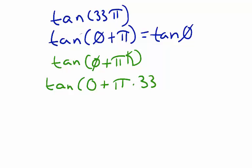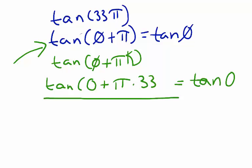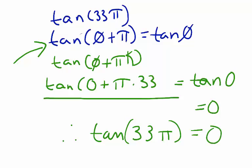Considering our property that tangent of theta plus pi equals tangent of theta, we know that tangent 0 plus pi times 33 equals tangent of 0, which equals 0. Therefore, tangent of 33 pi is equal to 0.